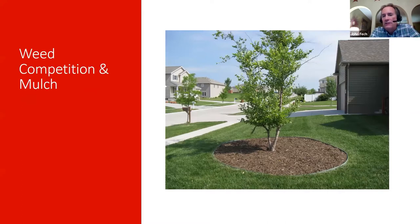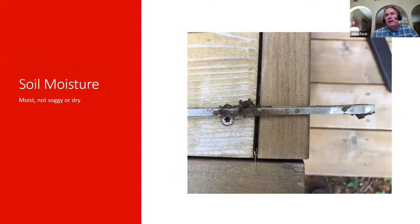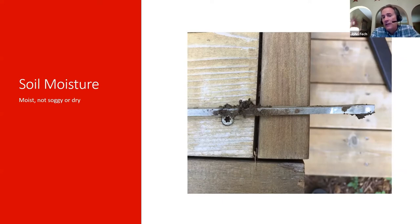When checking the screwdriver, look at two things: how far down you can push it and how easy it is, and what the soil looks like when it comes out — is it dry and powdery, does water drip off, or is it a nice moist consistency? Ideally you want soil that is moist but not muddy. Both the resistance and the appearance give you a good indication of soil moisture conditions.